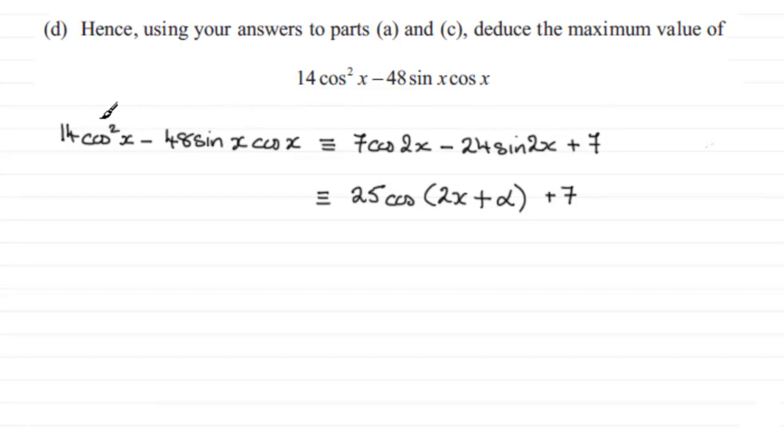Because 14 cos squared x minus 48 sine x cos x, we found in the last part, part c, was identical to 7 cos 2x minus 24 sine 2x plus 7.